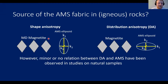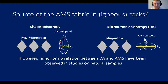The long axis of the magnetite crystal corresponds to k1, the longest axis of the AMS ellipsoid. Alternatively, distribution anisotropy can control the AMS due to magnetic interactions between magnetite and ferromagnetic phases. For example, a particular spatial distribution of magnetite grains would correspond to a k1 axis in the AMS ellipsoid oriented in a specific direction.